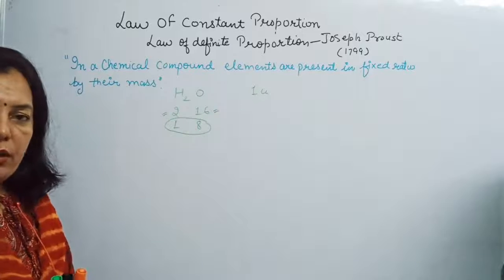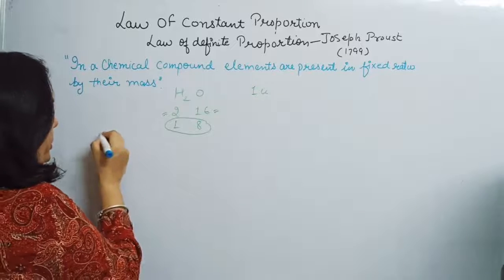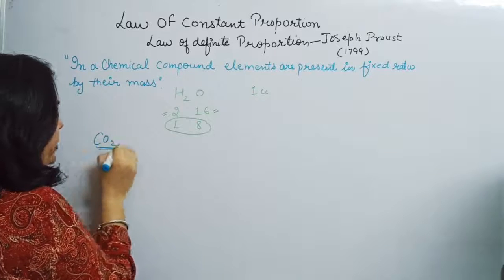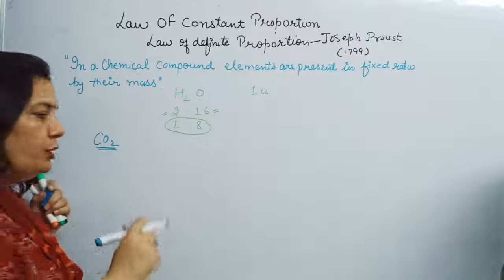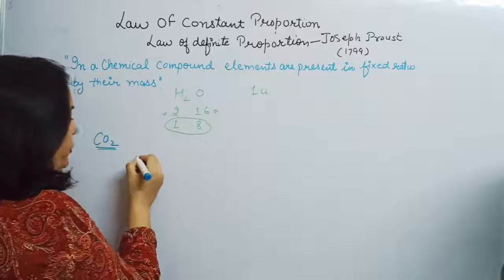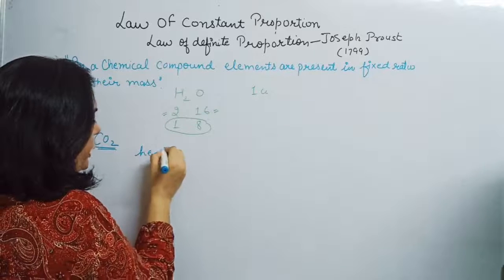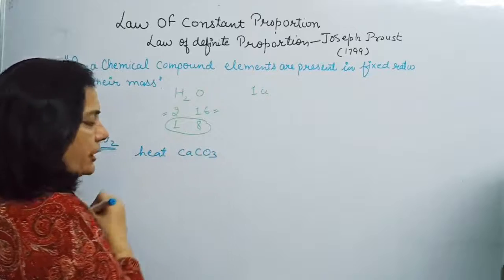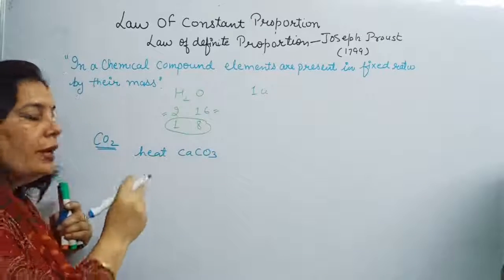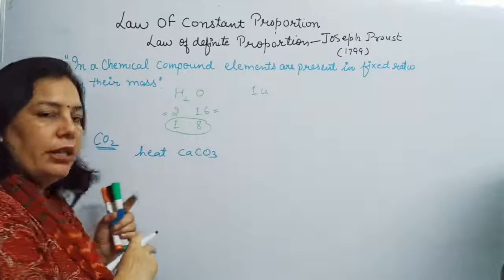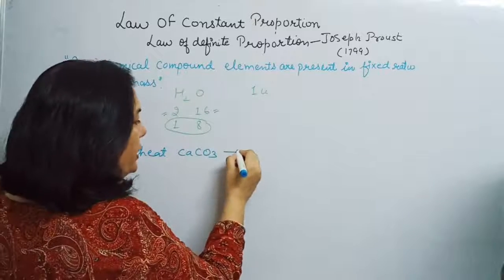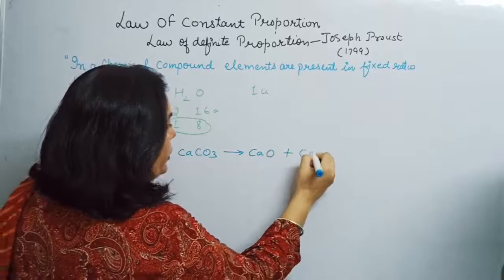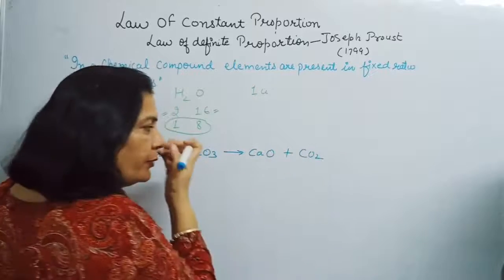Carbon dioxide can be formed by different chemical processes. The first process is when we heat calcium carbonate, also known as limestone. When we heat calcium carbonate, we get calcium oxide and carbon dioxide.